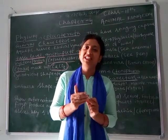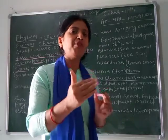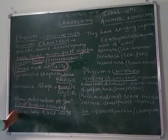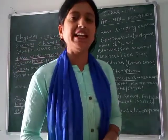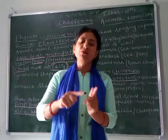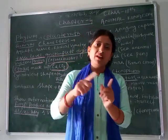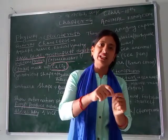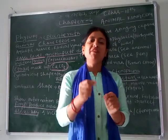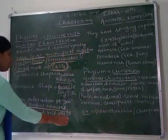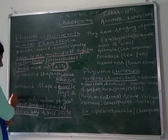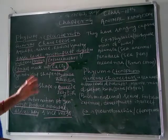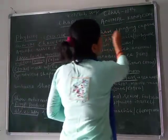Metagenesis means Coelenterate species show two types of life forms. Polyp forms medusa when it reproduces asexually. Medusa is an alternate form of polyp. And medusa forms polyp when it reproduces sexually — this life cycle is called alternation of generation.